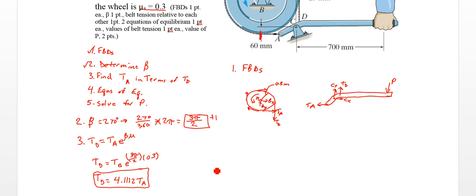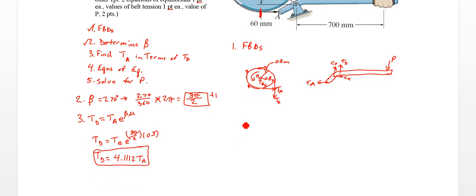Alright, so now we can finally write some equilibrium equations. Let's scroll down a little bit. So let's come over here. Equations of equilibrium. Alright, so we've got our wheel. So let's take our moment around B. Must equal 0. So we have 0 equals.